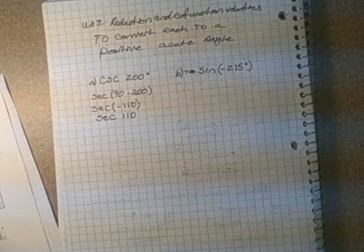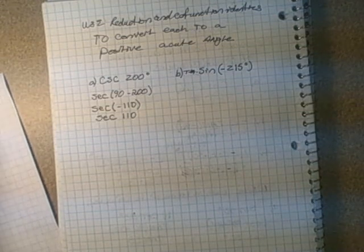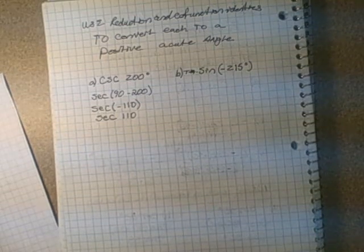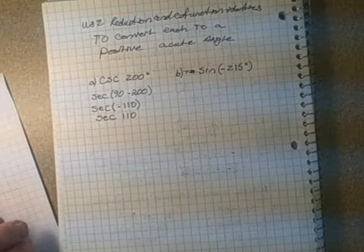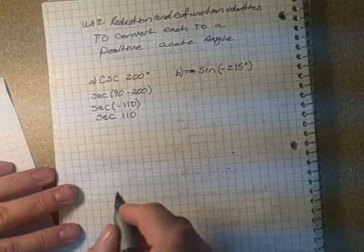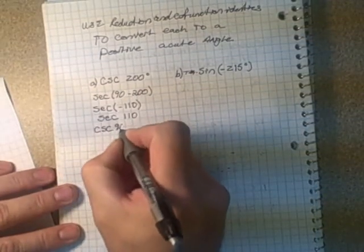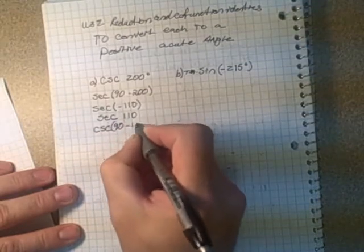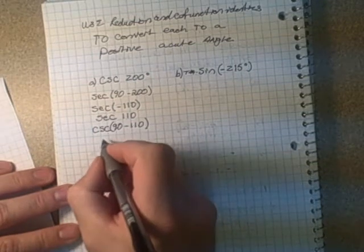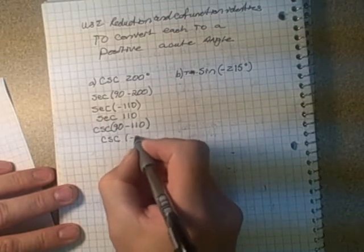Now move to the reduction identity for secant. The negative angle is just the same as the positive of that — the negative doesn't come out in front for cosine and secant. So this converts into secant 110. Now we need another co-function: secant equals cosecant of 90 minus theta. So cosecant of 90 minus 110 gives cosecant of negative 20 degrees.